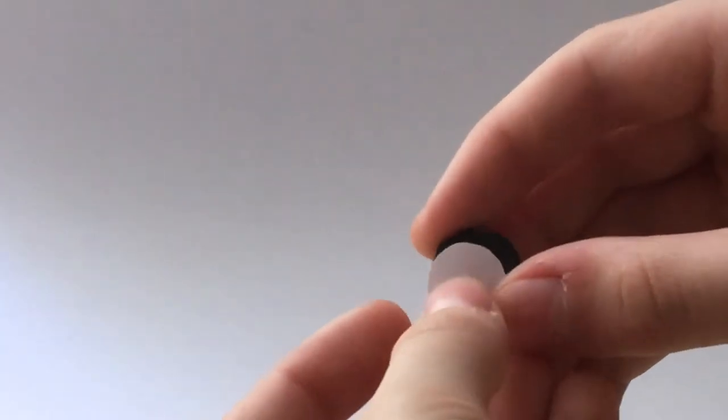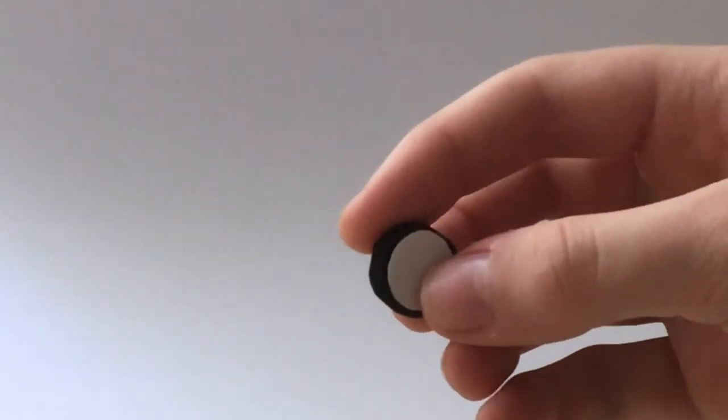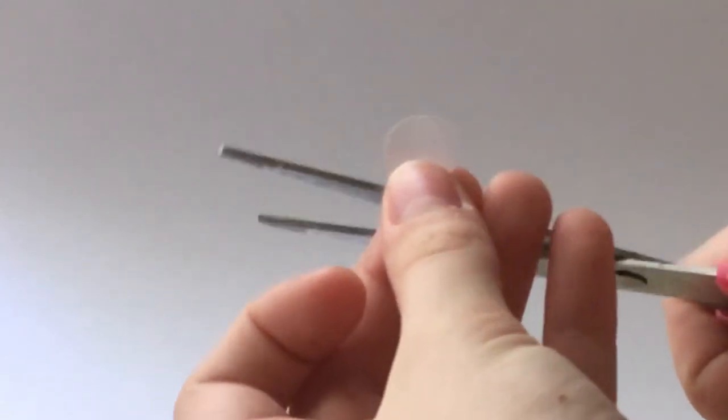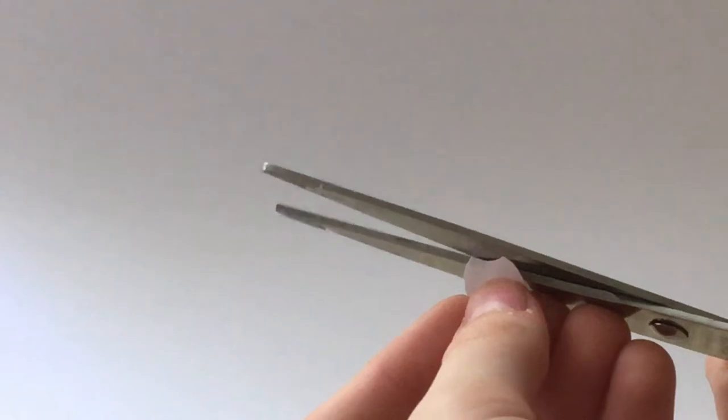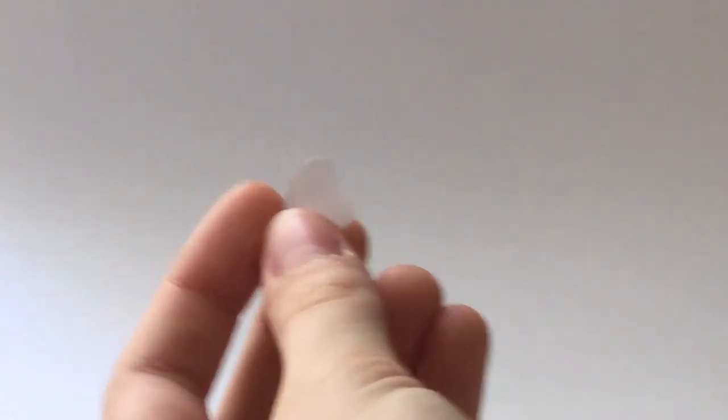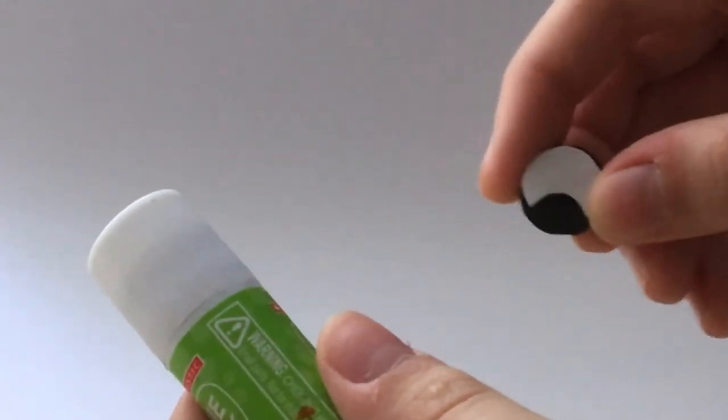Next, take paper and cut it into a circle a little bit smaller than that black circle. Take the white circle and cut a little curve out of the bottom of it. Glue both of those circles together.